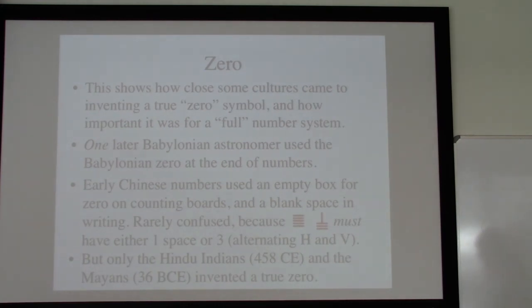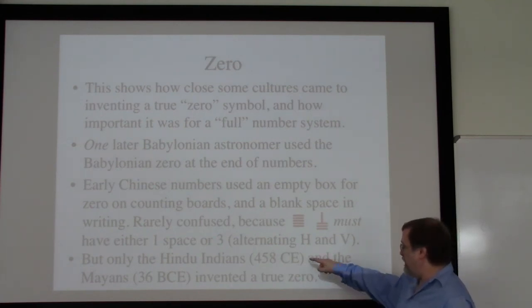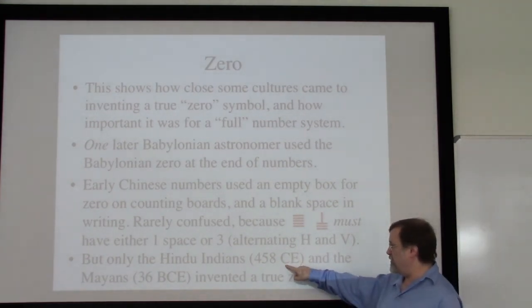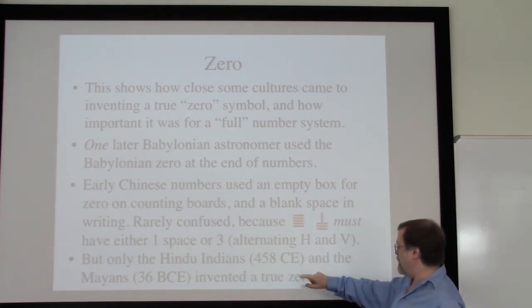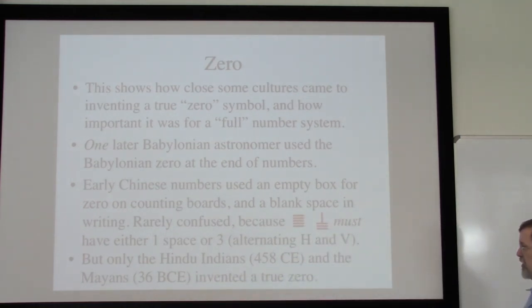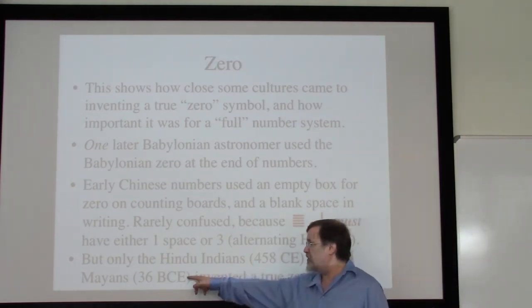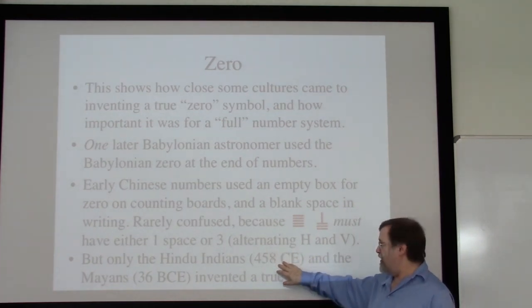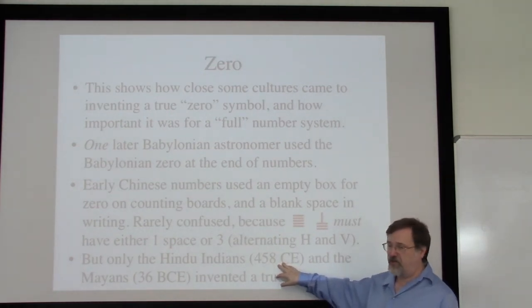Only the Hindu Indians and the Mayans invented a true zero. The first known occurrence of a zero in Hindu literature is in 458 CE. For the Mayans, it's 36 BCE — nearly 500 years earlier. It's very possible they were using a zero as early as 200 BCE, giving possibly 650 years before the Hindu instance. We just don't have enough written evidence to be sure.